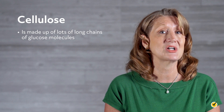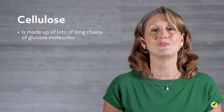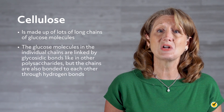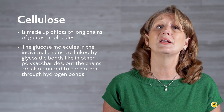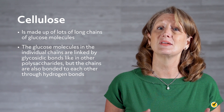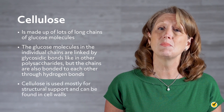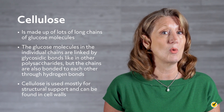Cellulose, the third form of polysaccharide, is made up of lots of long chains of glucose molecules. The glucose molecules in the individual chains are linked by glycosidic bonds like in other polysaccharides, but the chains are also bonded to each other through hydrogen bonds. Cellulose is used mostly for structural support and can be found in cell walls. Sometimes a polysaccharide called chitin is considered its own class, but it has the exact same structure as cellulose except it has an acetylated amino group at the second carbon instead of a hydroxyl group.